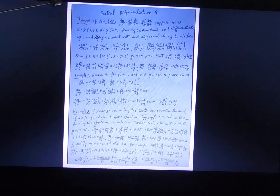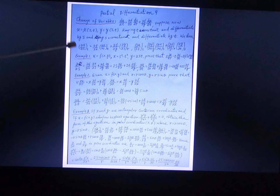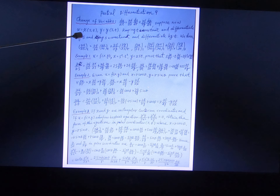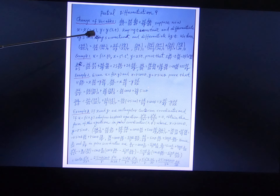Let's look at the change of variable. You can change variables — for example, x is a function of s and t (independent variables), and y is also a function of s and t. You can change the variable. These are some examples.